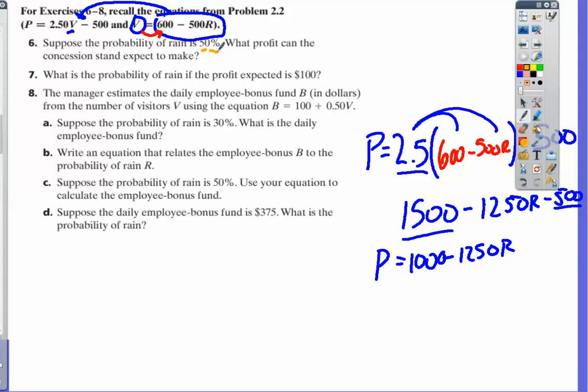That means our profit equals 1,000 minus 1,250 times 50% or 0.5. What is half of 1,250? It's 625.